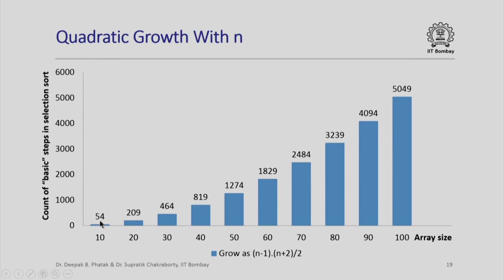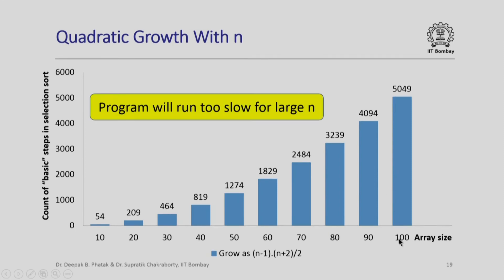Here I have plotted the count of basic steps in selection sort versus the array size, for array sizes increasing from 10 to 100. The growth is (n-1)(n+2)/2, and you can clearly see that this growth is more than linear — it is quadratic growth, you can see the contours of a parabola. This is problematic because the number of basic steps needed by selection sort is increasing too fast with the array size, meaning for large n the program will run too slow.